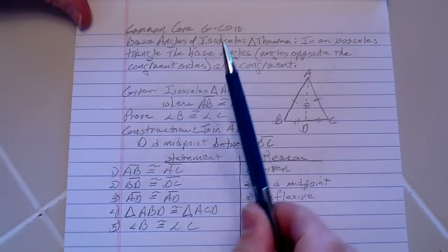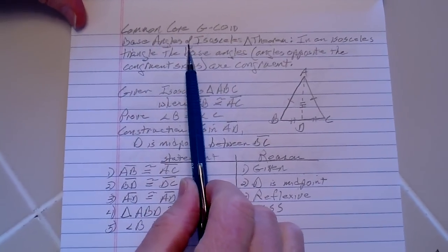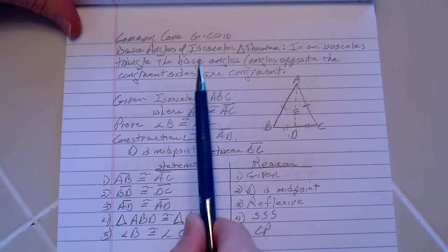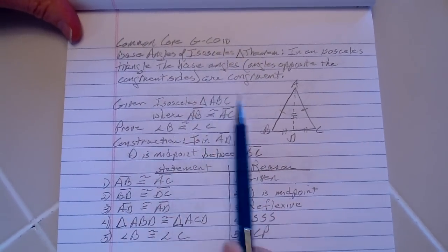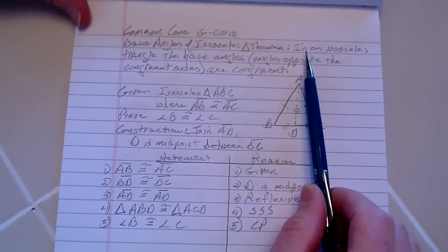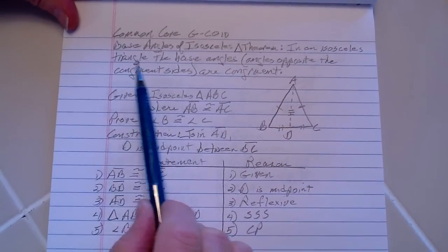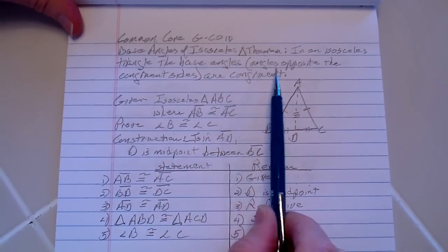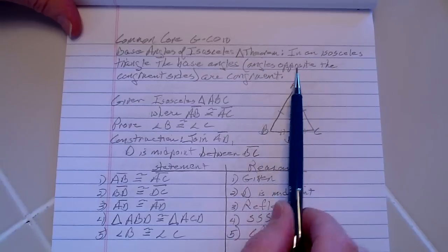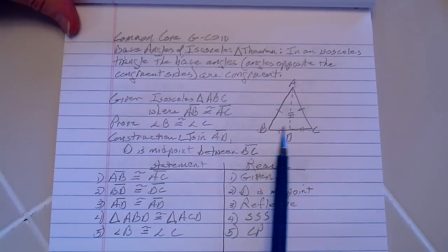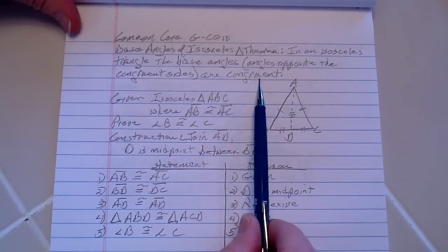Today, we're going to be proving the base angles of the isosceles triangle theorem. That's part of the common core. This theorem states in an isosceles triangle, the base angles, that's the angles opposite the congruent sides, these are the congruent sides, these are the two angles which are congruent.